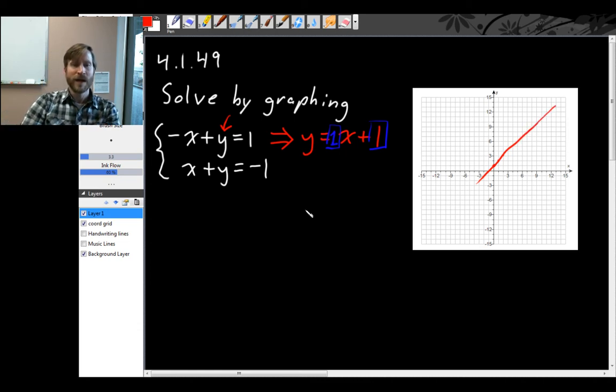Now for the second line, we'll just do the same thing. Rearrange this equation so it's in slope-intercept form. This time we're going to subtract x from both sides. We get y equals minus x minus 1.